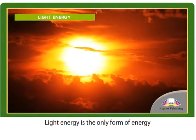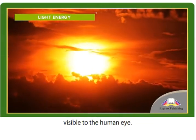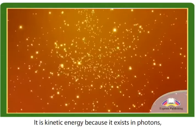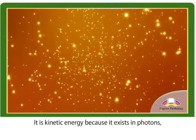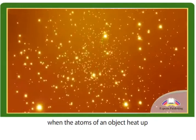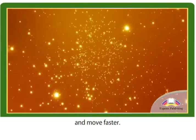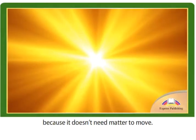Light energy is the only form of energy visible to the human eye. It is kinetic energy because it exists in photons, which are produced when the atoms of an object heat up and move faster. It can travel through a vacuum because it doesn't need a medium to move through.